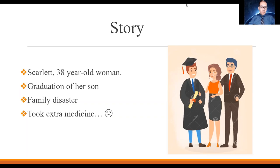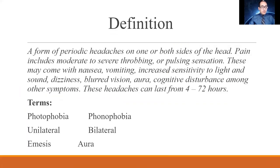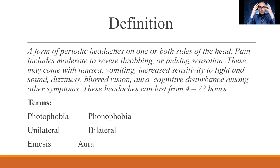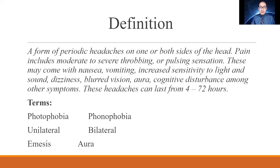The story had a happy ending, but be careful — taking too much medication thinking your migraine will go away can hurt other organs and the migraines may still not improve. A migraine is a form of periodic headaches from one side or both sides of the head. The pain is moderate to severe with a pulsing sensation — like something is slowly blowing up inside you. You can have nausea, vomiting, increased sensitivity to light and sound, dizziness, blurred vision, aura, and cognitive disturbances. These headaches tend to last from 4 to 72 hours — that's up to three days.